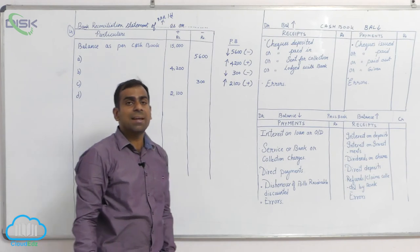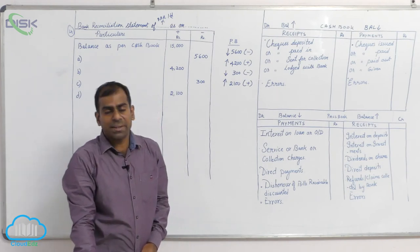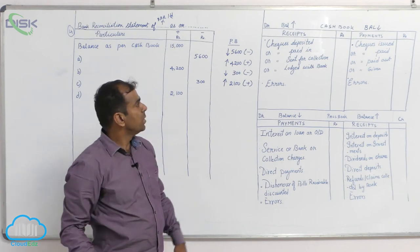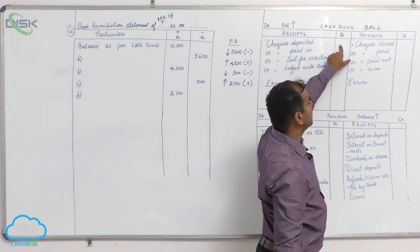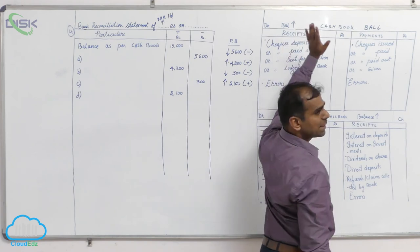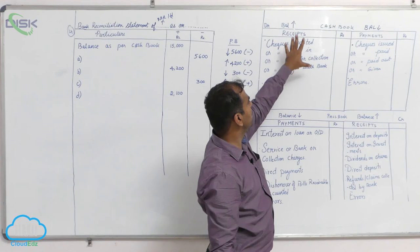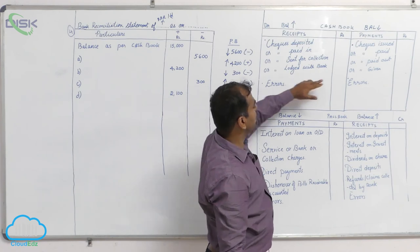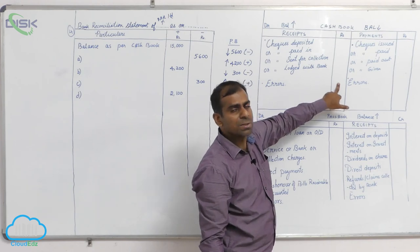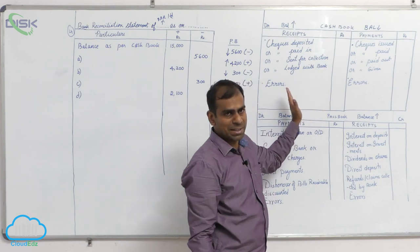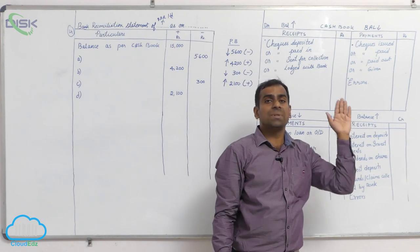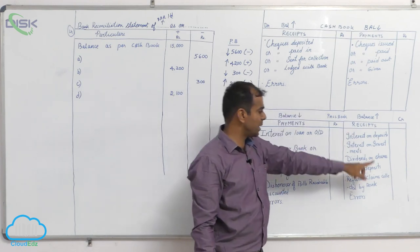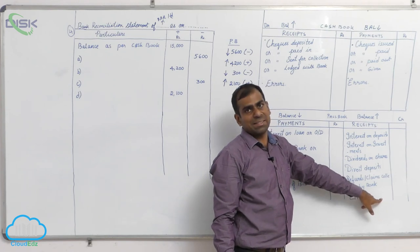The last transaction states: a cheque of ₹900 was deposited into the bank but forgot to be entered in the cash book. When you deposit a cheque, you should enter it on the receipt side of the cash book, which would increase the cash book balance. But since you did not enter it, there is no impact on the cash book balance. This is a mistake — you were supposed to enter it on the receipt side but did not. The rule is: when it is a mistake, we assume the bank will do it correctly, meaning the bank will enter it on the receipt side of the pass book.